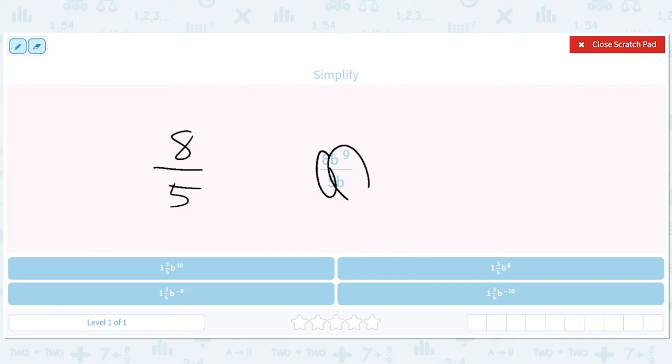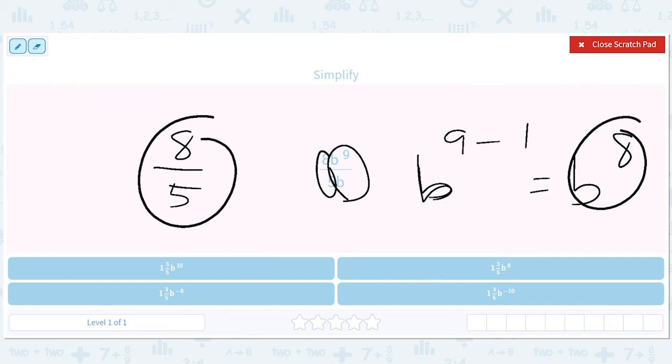And over here, we have b to the 9th over b, which was a separate lesson, I think, where you just do 9 minus 1. So that's b to the 8th. And you put these together. So you get 8 fifths times b to the 8th.